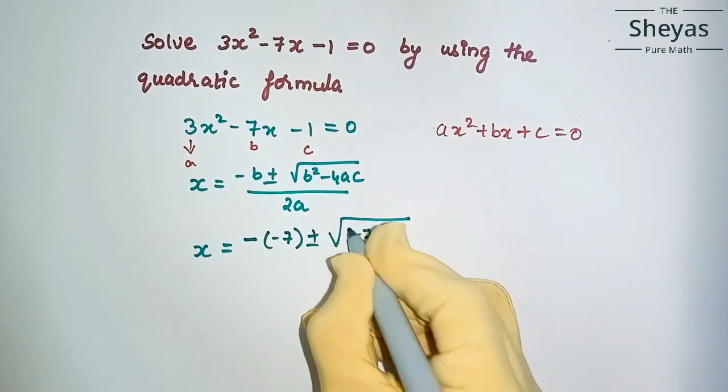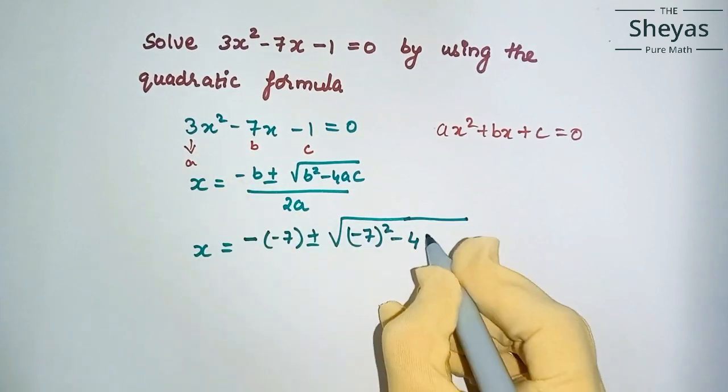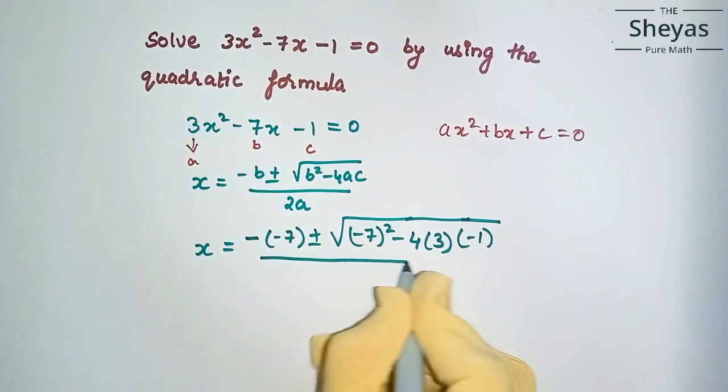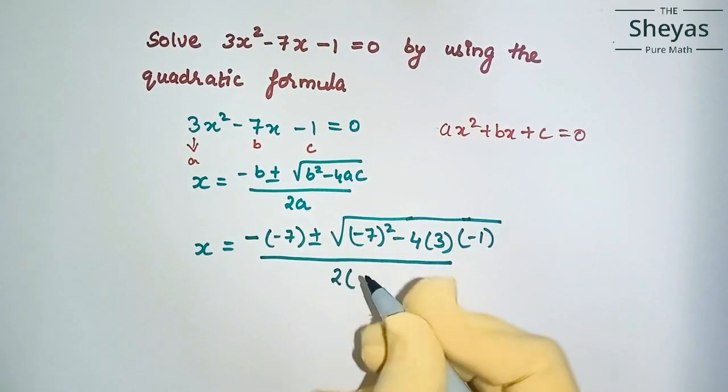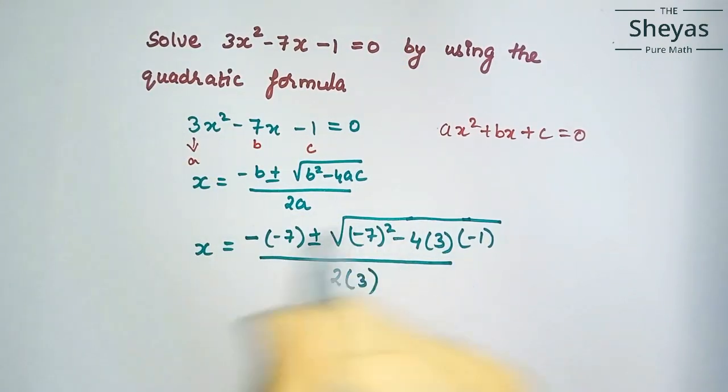Again, the b value is minus 7, the whole square minus 4. a is 3, so 3, and c is minus 1 by 2a. a is 3. Now we can calculate this.